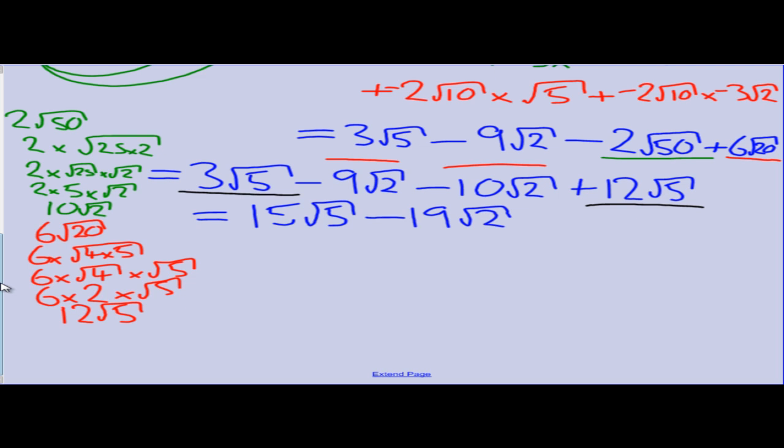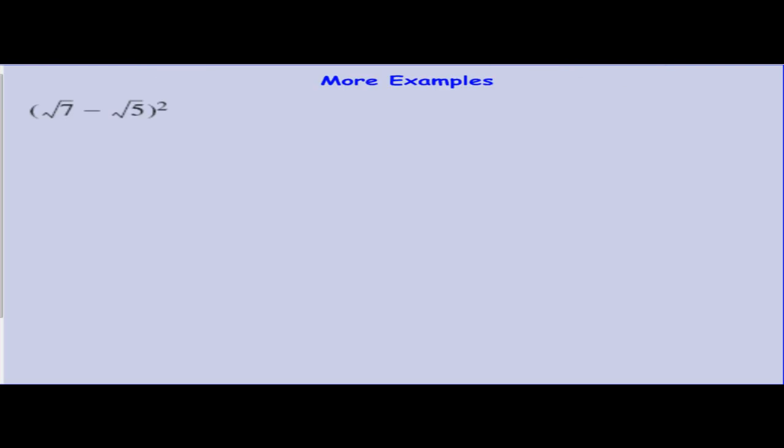Alright, and finally that gives us our solution. After all that work, all we get is 2 surds with a couple of coefficients. A couple more examples - I just want to make sure that we are used to looking at them.